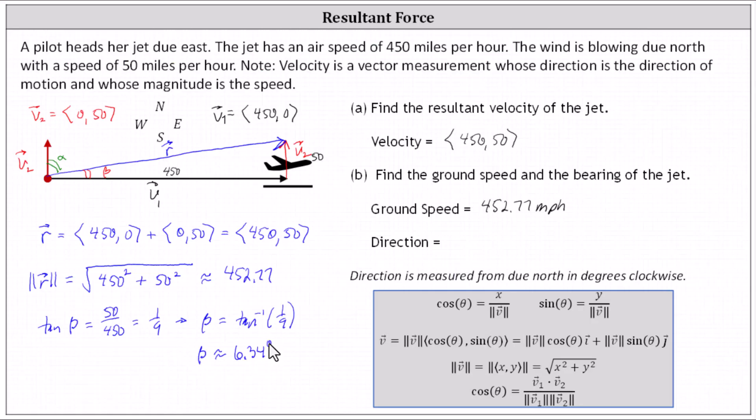But again, we're not looking for beta. We're looking for alpha, where alpha is equal to 90 degrees minus beta, or 90 degrees minus 6.34 degrees, which is equal to 83.66 degrees. So the direction from due north measured clockwise in degrees is 83.66 degrees. I hope you found this helpful.